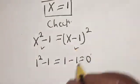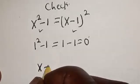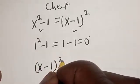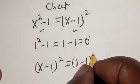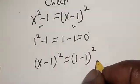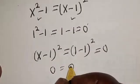Now consider the right hand side: x minus 1 all square. This equals 1 minus 1 square, which equals 0. Therefore the left hand side, 0, equals the right hand side, 0.